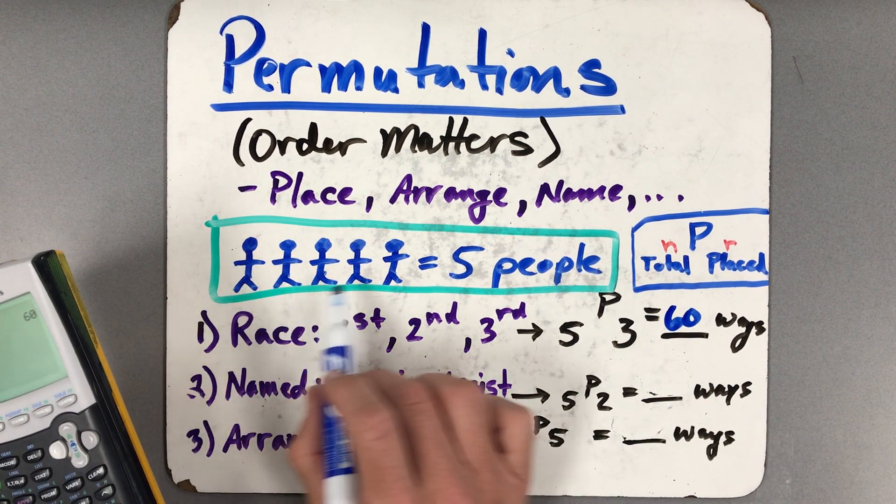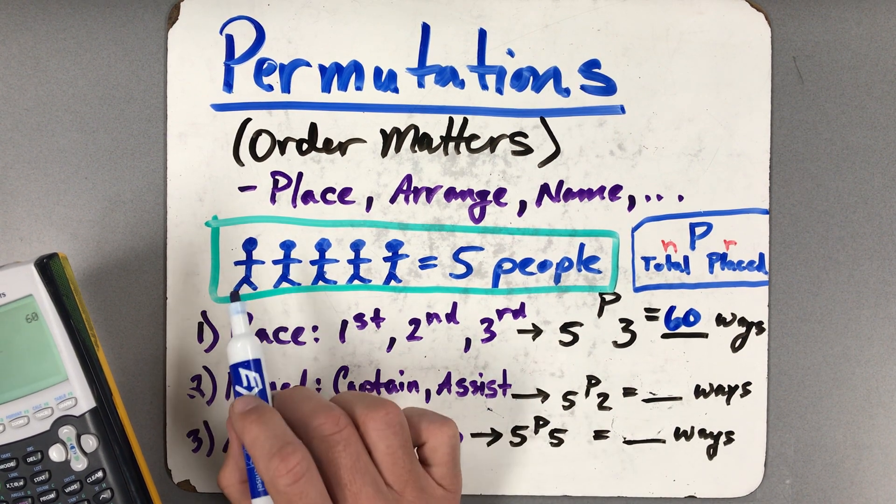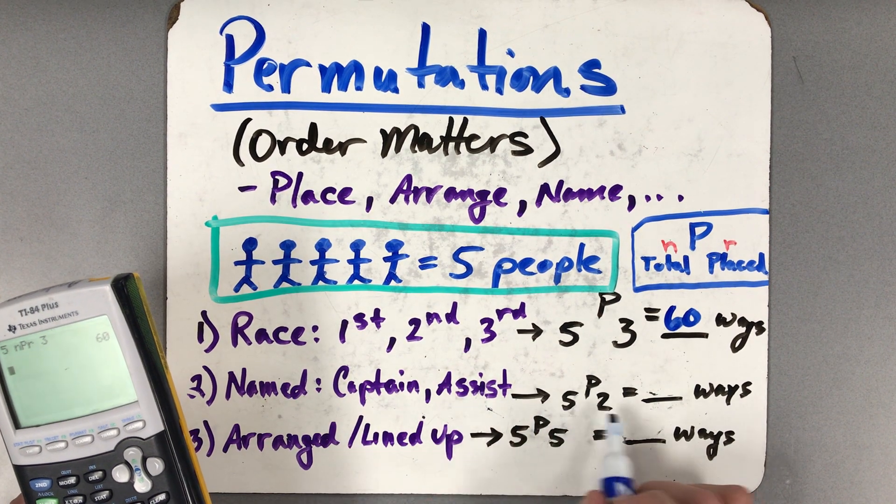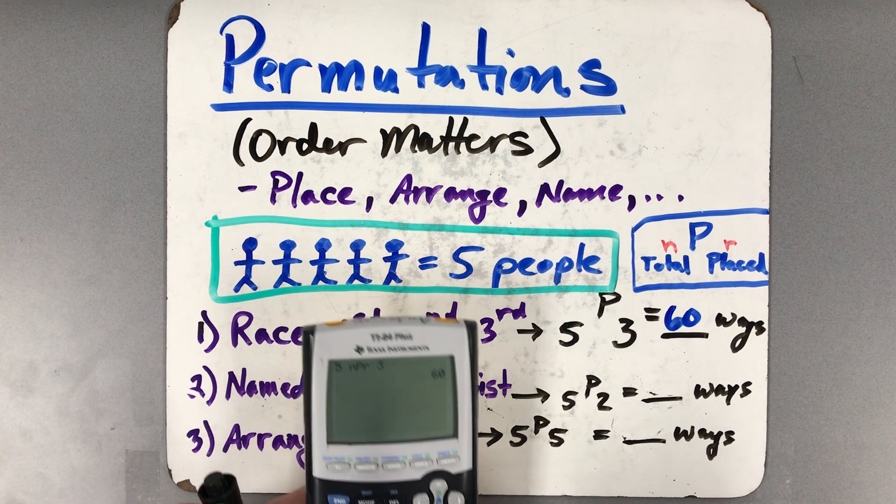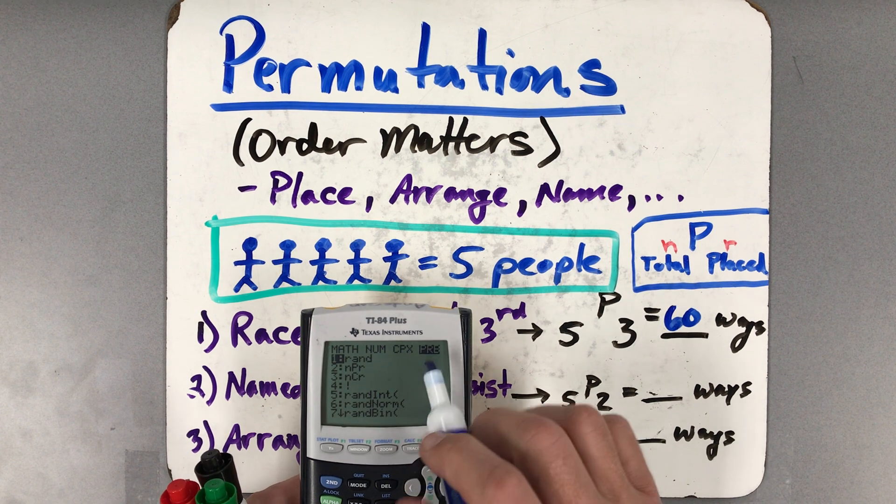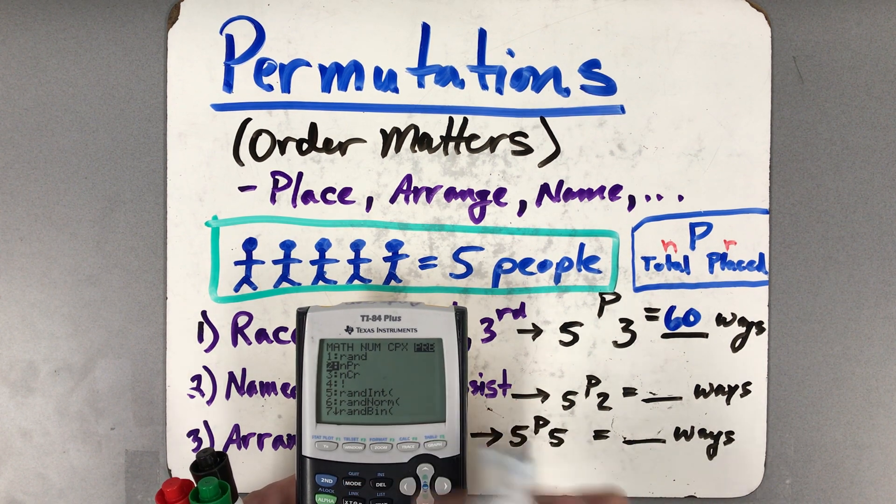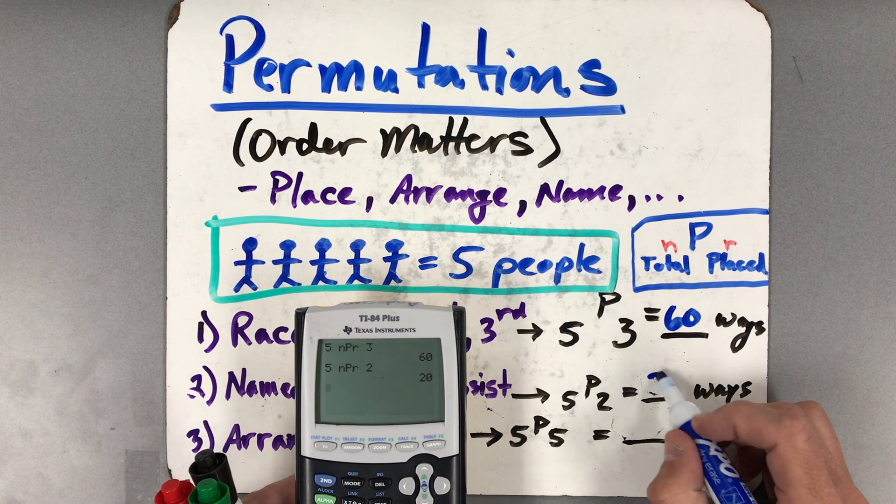If I just want to take these five people and give them a name, like captain or assistant, if I want to name a captain and an assistant out of that team, I would then have five people to put in two spots, and those named spots that they're going to are specific. So I would say, I want to have five people, then go math, left arrow, and if you have a newer calculator, you have to go left arrow twice, and then choose option number two for nPr, and then I'm going to put them in two spots. And then there's 20 ways to do that.